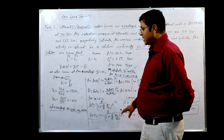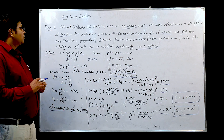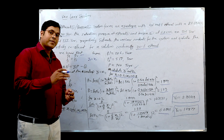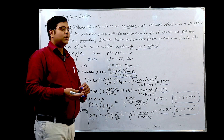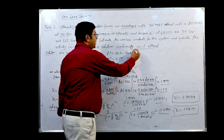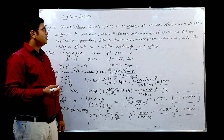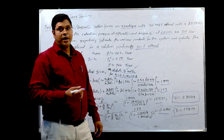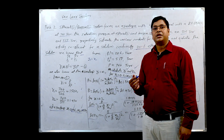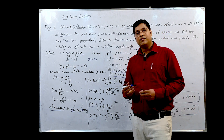With this exercise we came to know that the Van Laar equation is very useful for such solutions. For an azeotrope, it gives the constant values A and B, and with those constants we can determine the activity coefficient for various compositions of the components. Keep learning thermodynamics and try to solve various numerical problems to enhance your knowledge, expertise, and confidence. Keep learning.